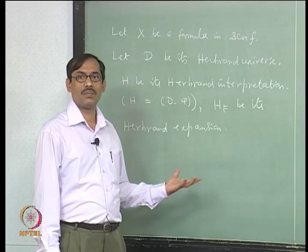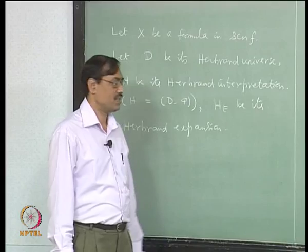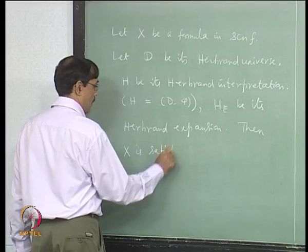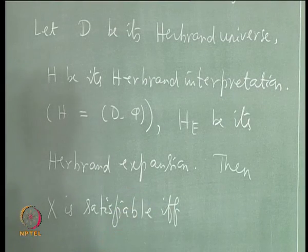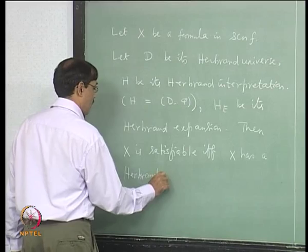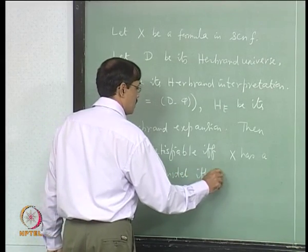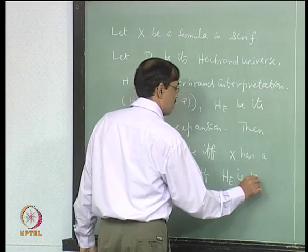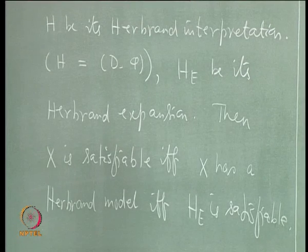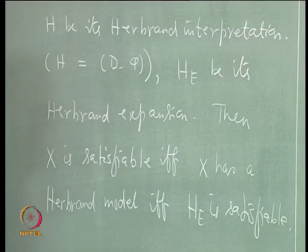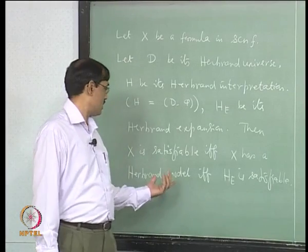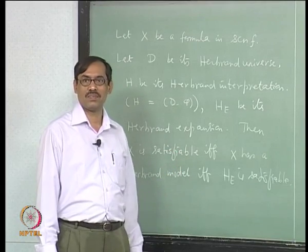Then we wanted to show satisfiability. X is satisfiable if and only if X has a Herbrand model, if and only if its Herbrand expansion is satisfiable. This was our proposal. Now let us see which parts can be dispensed with easily. We can start from the beginning: suppose X is satisfiable. Then we want to show that X has a Herbrand model. That is really the main part of the proof. All others will be simpler.